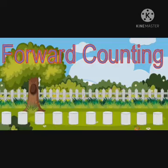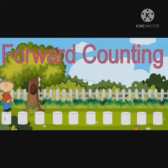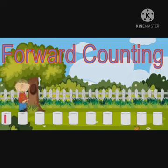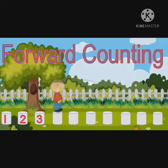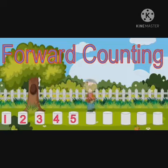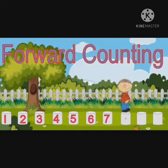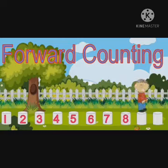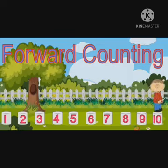Mayank arranged 10 cans quickly. After that, he started counting from the first point: one, two, three, four, five, six, seven, eight, nine, and ten. He told Meeta that this is forward counting.